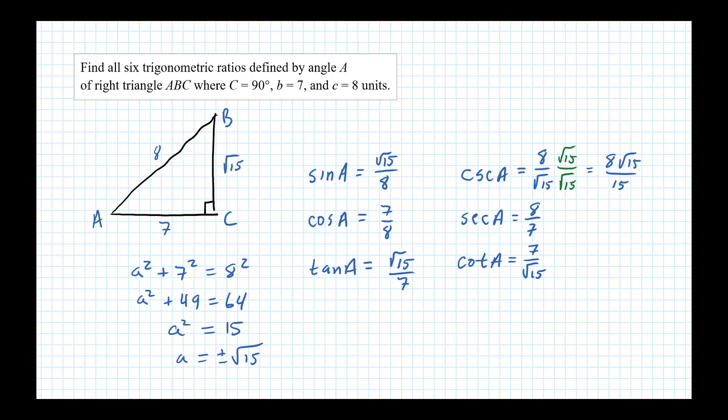Now we can do that as well for the cotangent here. Multiplying numerator and denominator by square root of 15, we get 7 square root of 15 over 15.